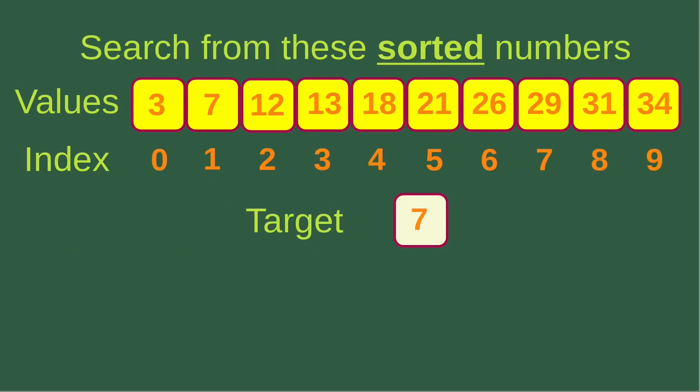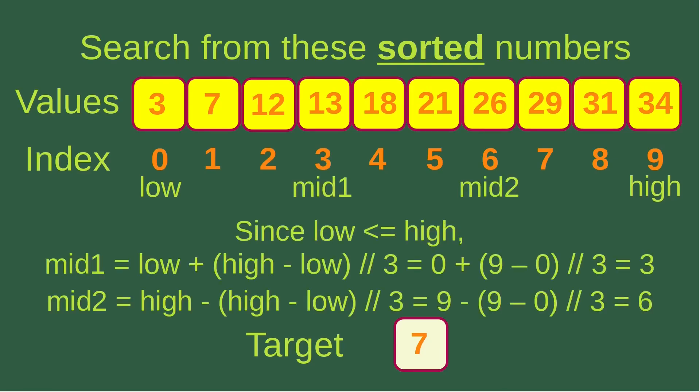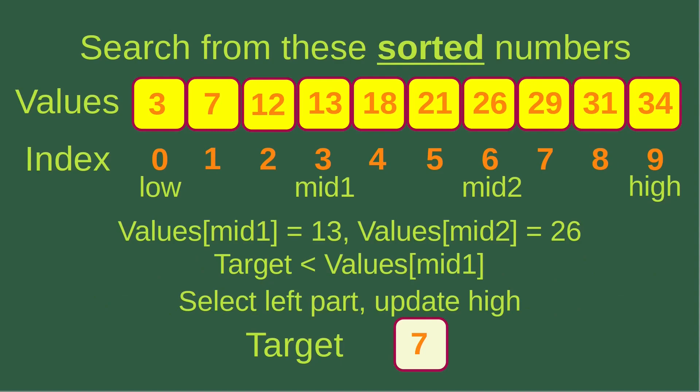Now let us see an example. Suppose I want to find number seven from this array of sorted numbers. Since we have the new array, we put low to be the far left index, which is zero in this case, and high to be nine, which is the far right index. Since low is smaller than or equal to the high index, we can find mid one and mid two. Mid one is equal to three and mid two is equal to six. The value at mid one is 13 and the value at mid two is 26. Since the target is seven, it is smaller than the value at mid one, so we select the left part and update the high index.